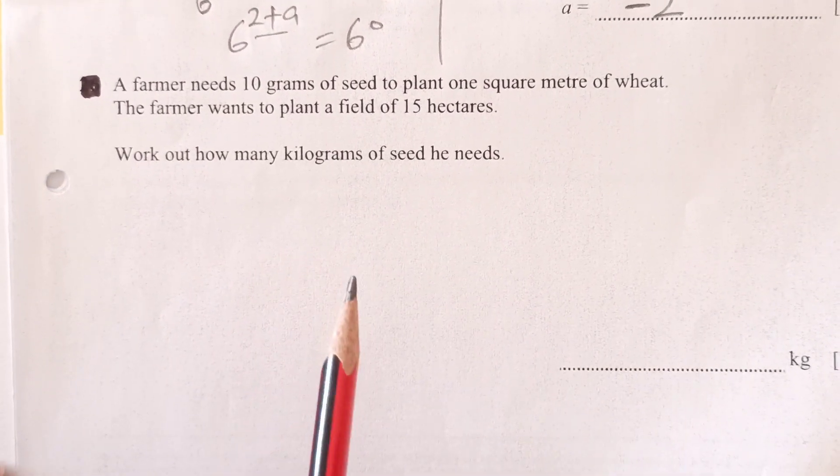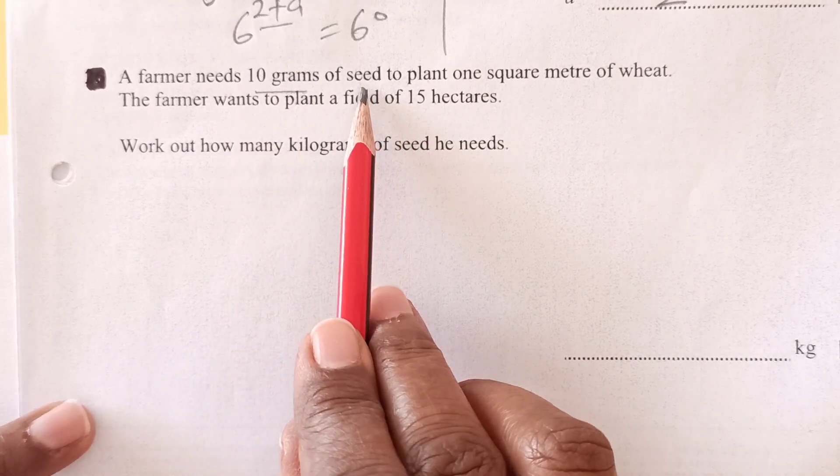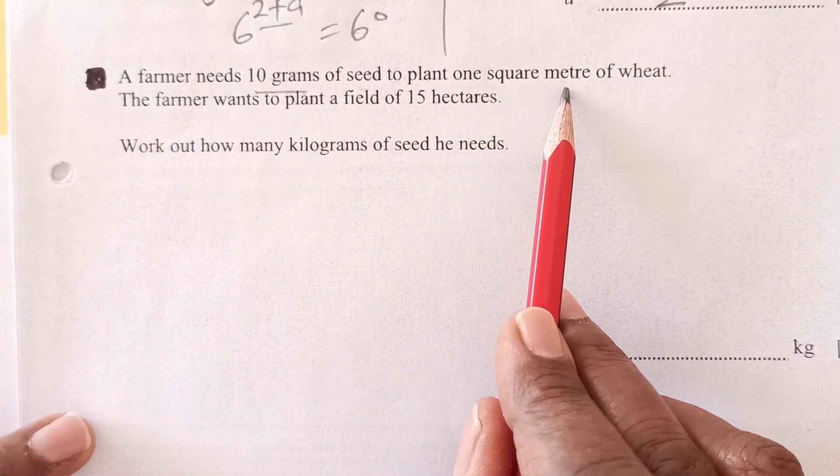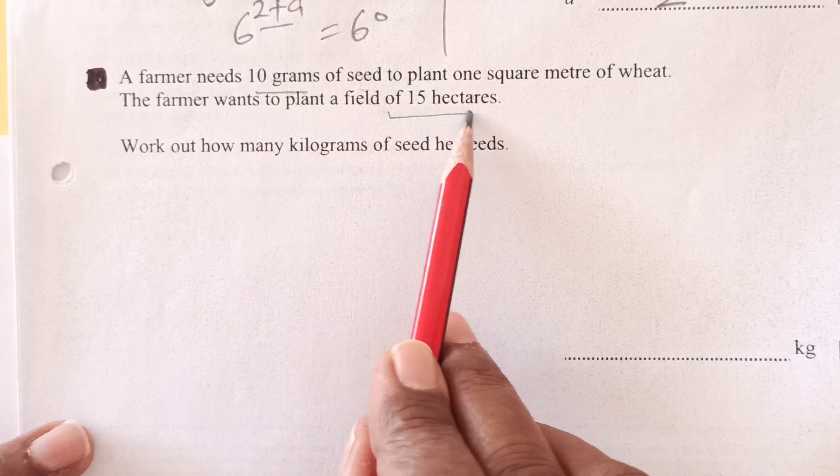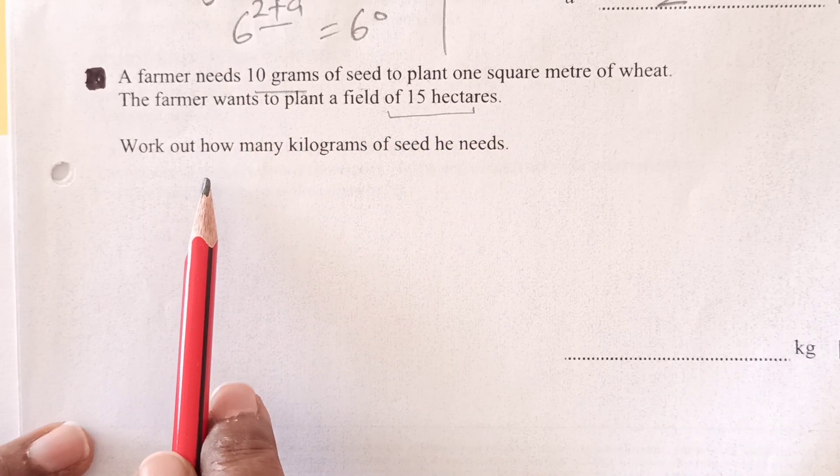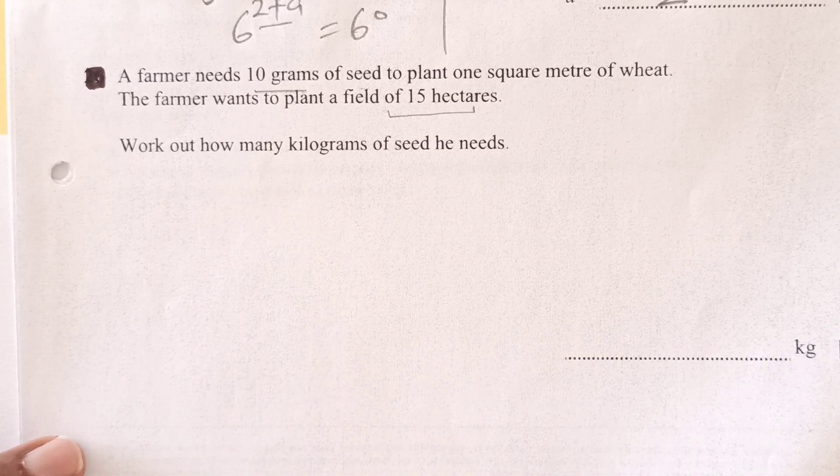Now for that next one, a farmer needs 10 grams of seed to plant 1 square meter of wheat. The farmer wants to plant a field of 15 hectares. Work out how many kilograms of seeds he needs.